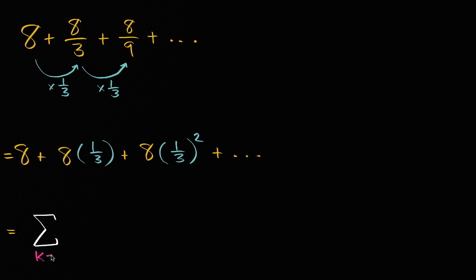We could say from k equals 0, and this is an infinite series right here. We're just going to keep on going forever, so to infinity of, well, what's our first term? Our first term is 8, so it's going to be 8 times our common ratio, 1/3, to the k power.